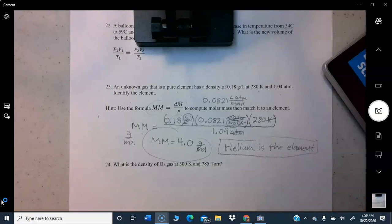What is the density of O2 gas at 300K and 785 torr? In this case you're going to know the molar mass because it's O2 gas. You're given the temperature and you're given the pressure in torr, but you're going to have to convert that to atmospheres. So this time you're using the same equation but you're going to solve for density. Go ahead and do that problem on your own.